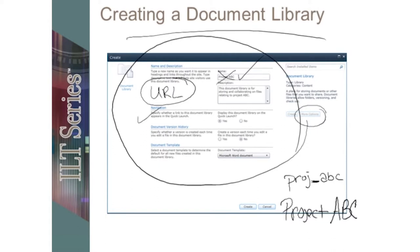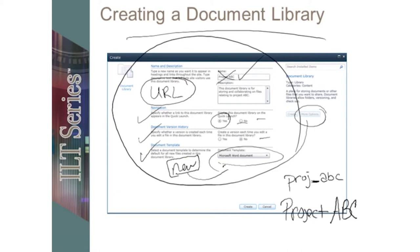The navigation — you can choose quick launch or no — this can be changed at any time later. Version history can also be changed later. Even the document template can be changed later, though it's not quite as simple as changing navigation and history. The template doesn't stop anybody from uploading any file SharePoint supports. It is connected to the new button, which would create a brand new empty Word document that is predefined to save back into the appropriate library.